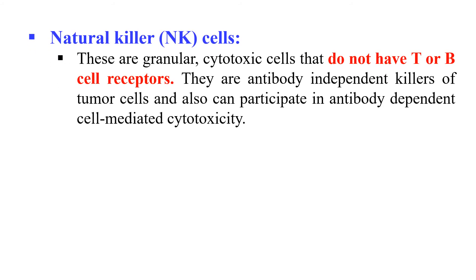Next are the Natural Killer Cells. These are granular cytotoxic cells that do not have receptors for T or B cells. They can kill cells in the absence of antibody, but they can also kill cells by using the antibody as a recognition point — a process known as antibody-dependent cell-mediated cytotoxicity.